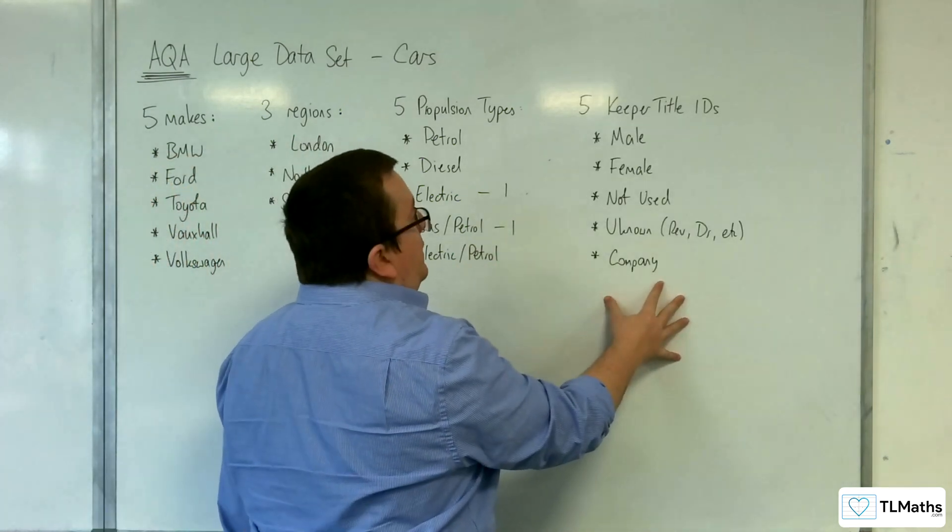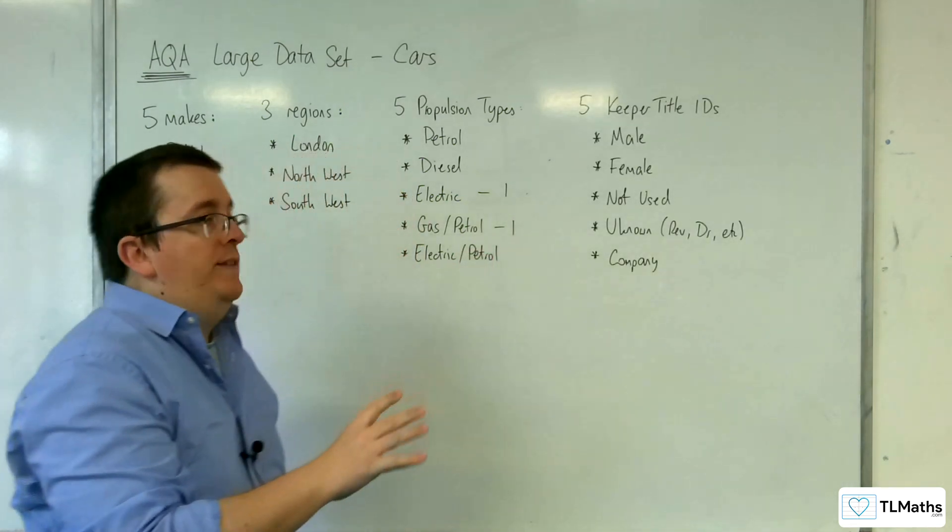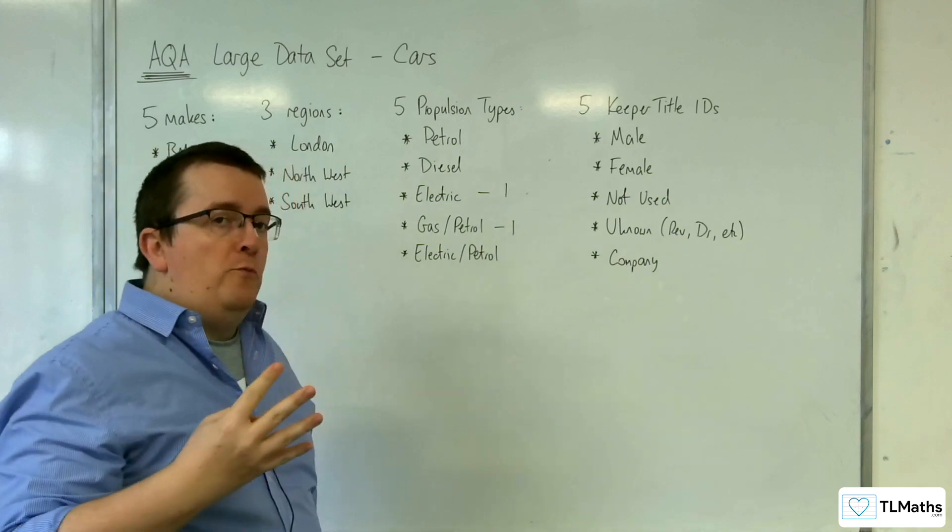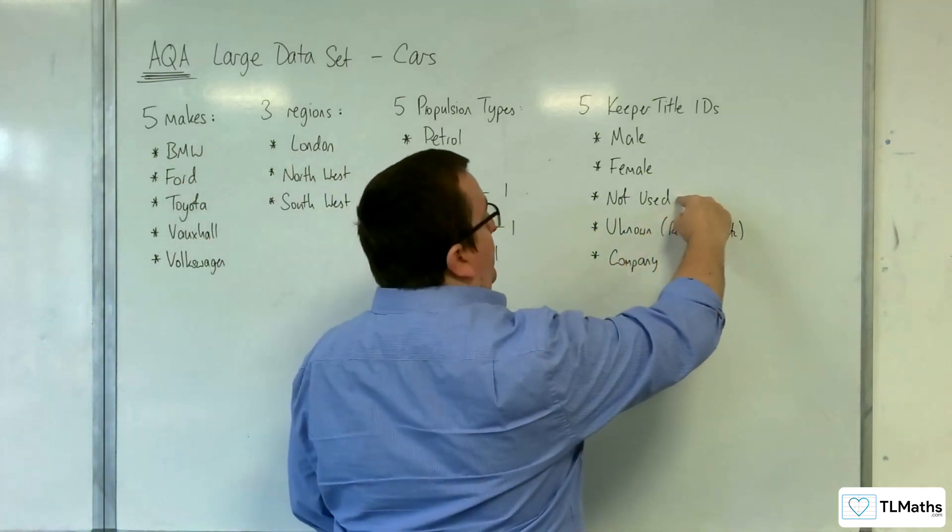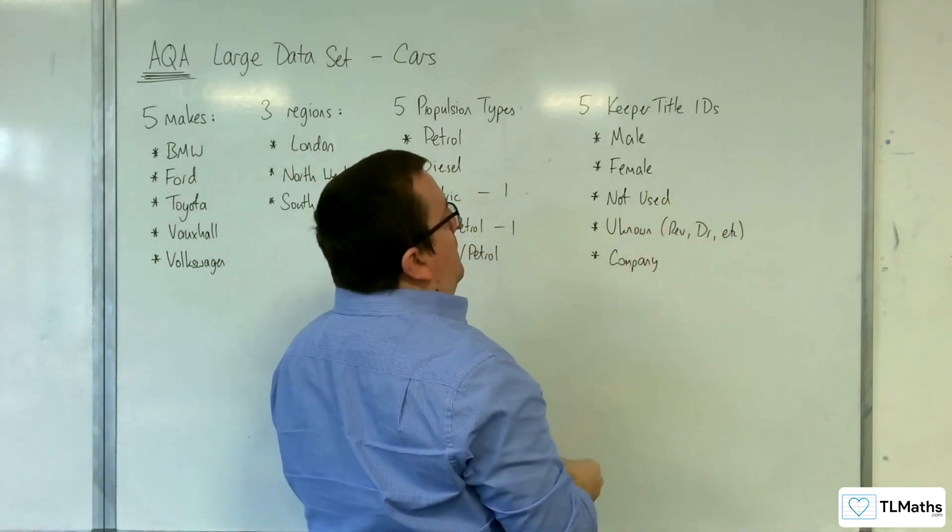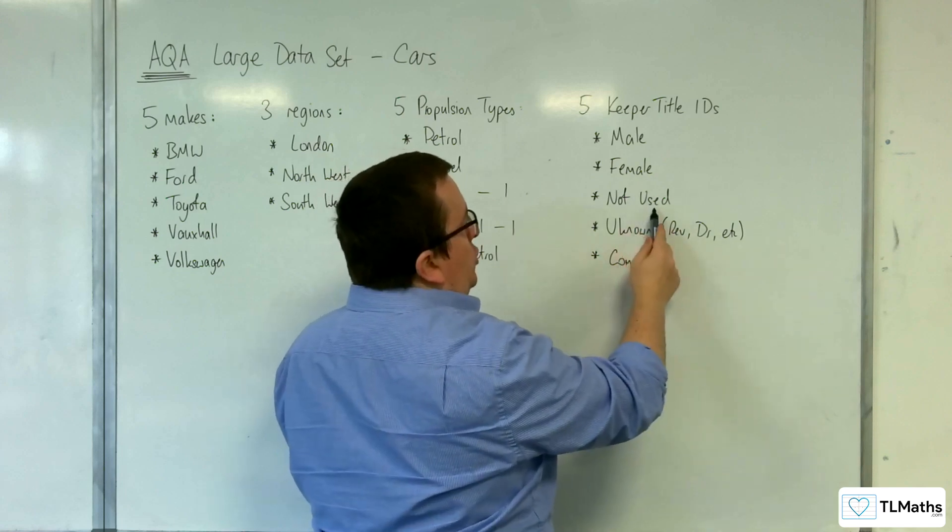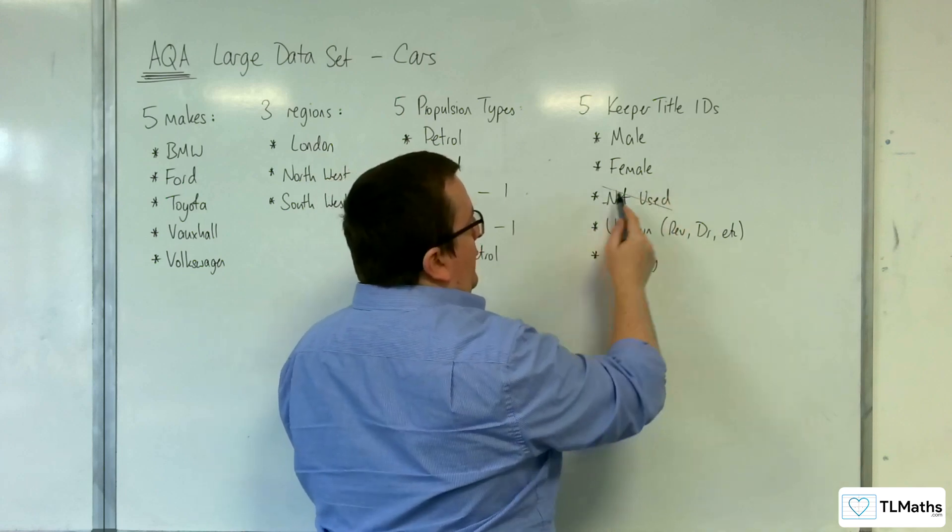There are five keeper title IDs that are mentioned in the data set, but only four of them are actually used. So this one saying not used isn't used, even though it is mentioned in the data set.